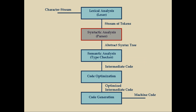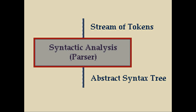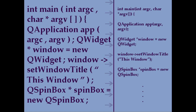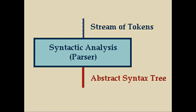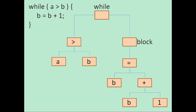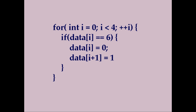The next stage of compiling is syntactic analysis. The sequence of tokens handed off by the lexer becomes the input for the syntax analyzer, or parser. It is the parser's duty to construct grammatically correct statements from the sequence of tokens, using the grammar rules of the language. The output of this process is an internal representation of these statements, usually in the form of an abstract syntax tree. Syntax errors, such as missing semicolons or operands, are caught in the syntactic analysis stage.